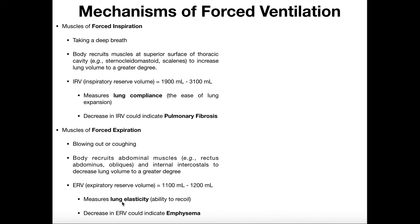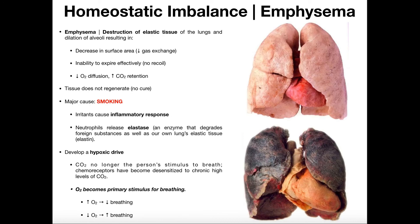ERV can also be a measure of lung elasticity — the ability to recoil. When you stretch a rubber band and let go, it snaps back to its original position; that's elasticity. Lungs should also be able to recoil back to their original size after expansion, and if they do that well, the lungs have good elasticity. If the lungs have poor elasticity and have trouble recoiling, this could indicate emphysema. In someone with emphysema, we would expect to see a decrease in expiratory reserve volume. We'll look at the mechanisms of emphysema in a future video.